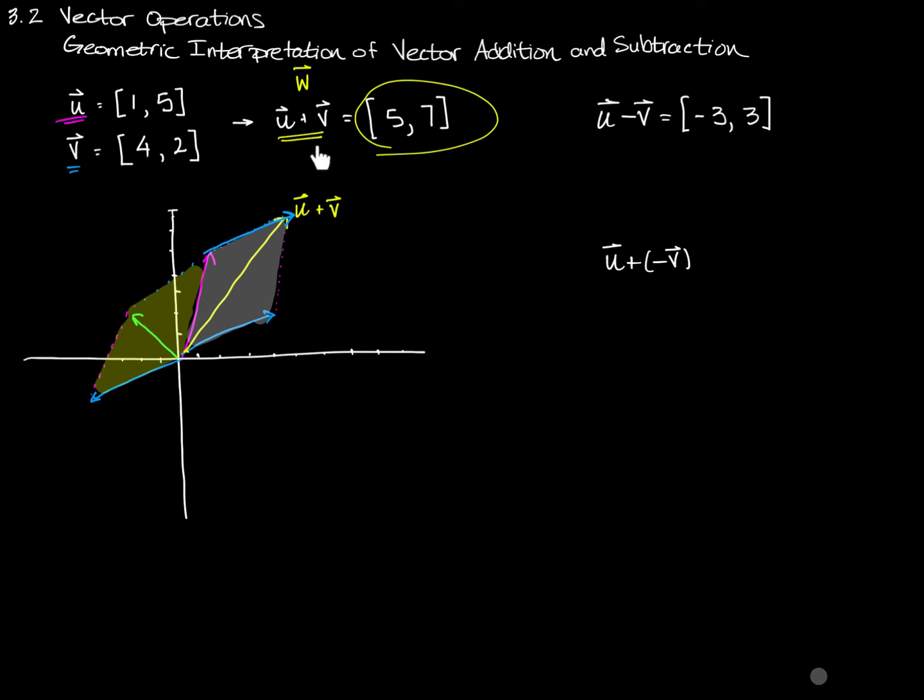You'll notice that when we did u plus v algebraically, we got this [5,7] and we just graphed it initially. But when we do that, we end up with this sort of a parallel side to vector v, a copy basically of vector v moved up so that it's tacked on to the end of vector u. Again, my having drawn this by hand initially, these things aren't quite lining up the way they should. The tail really should be exactly on the tip of vector u. But the tip of vector v really should be right there matching the tip of vector u plus v. But the idea here is that this is what it means to add two vectors together.